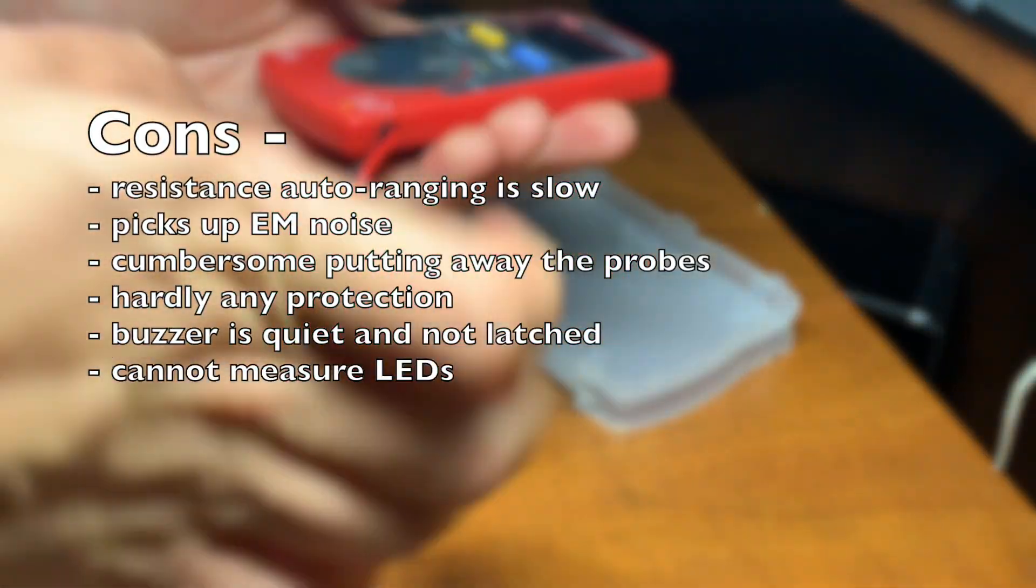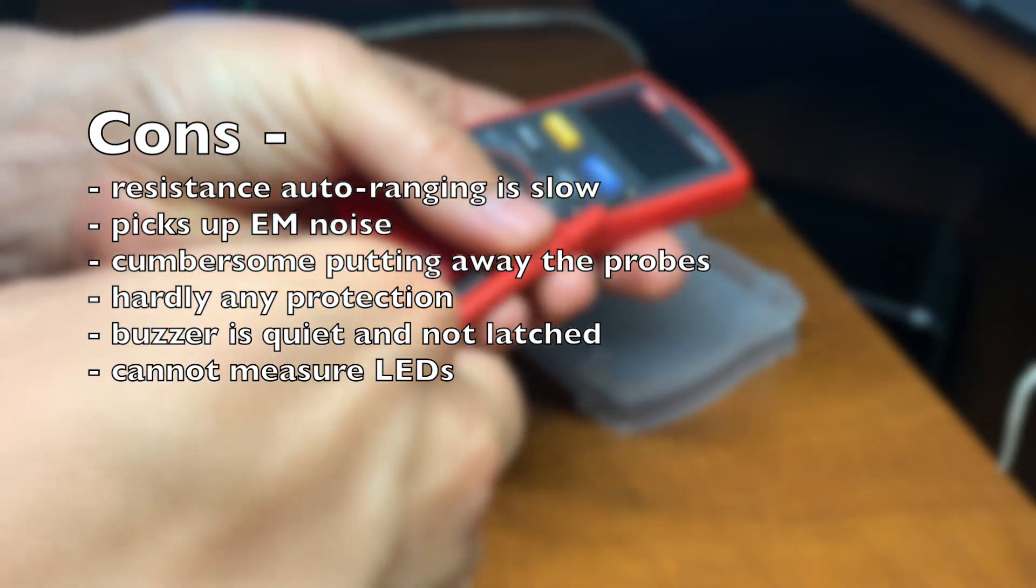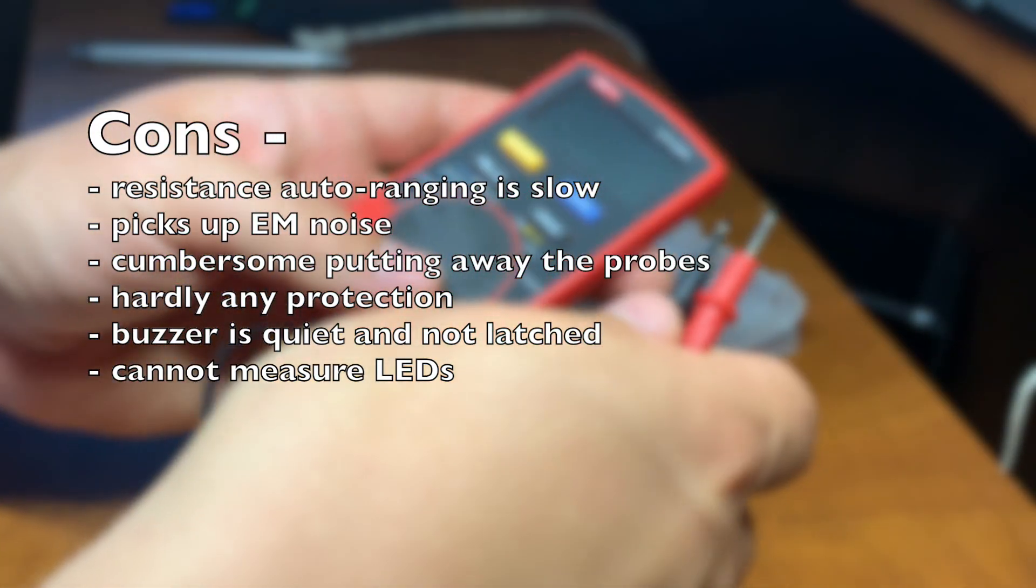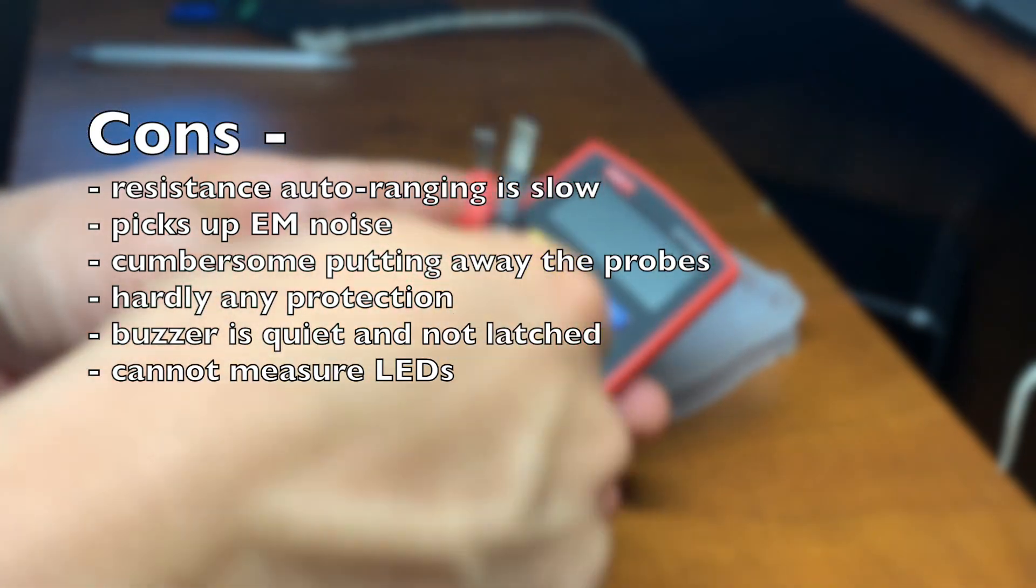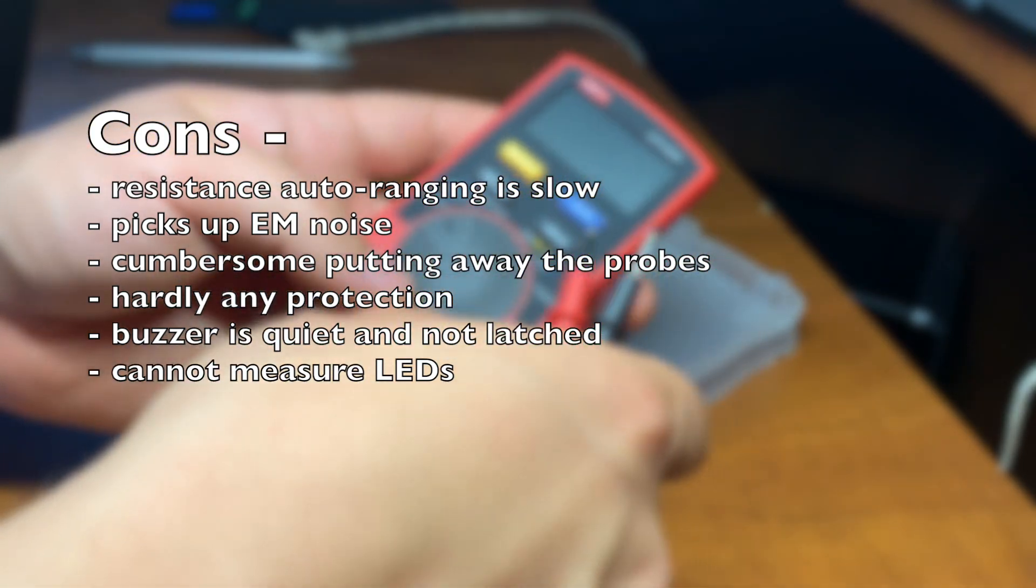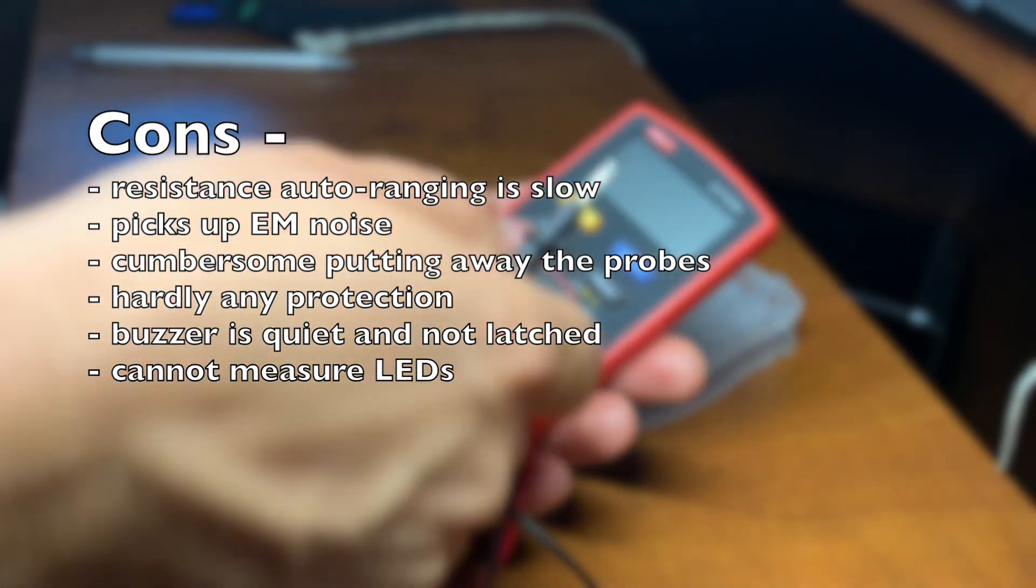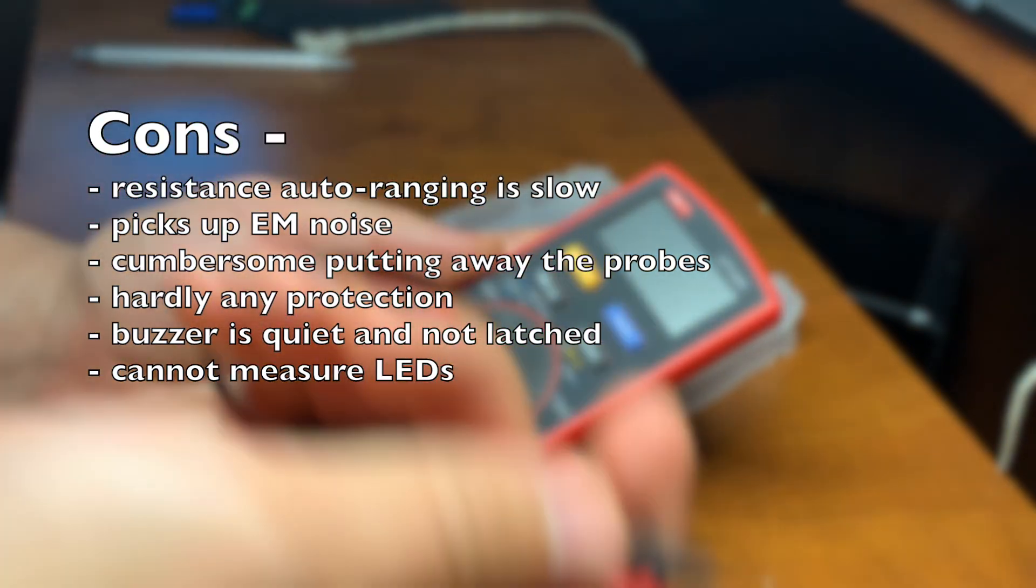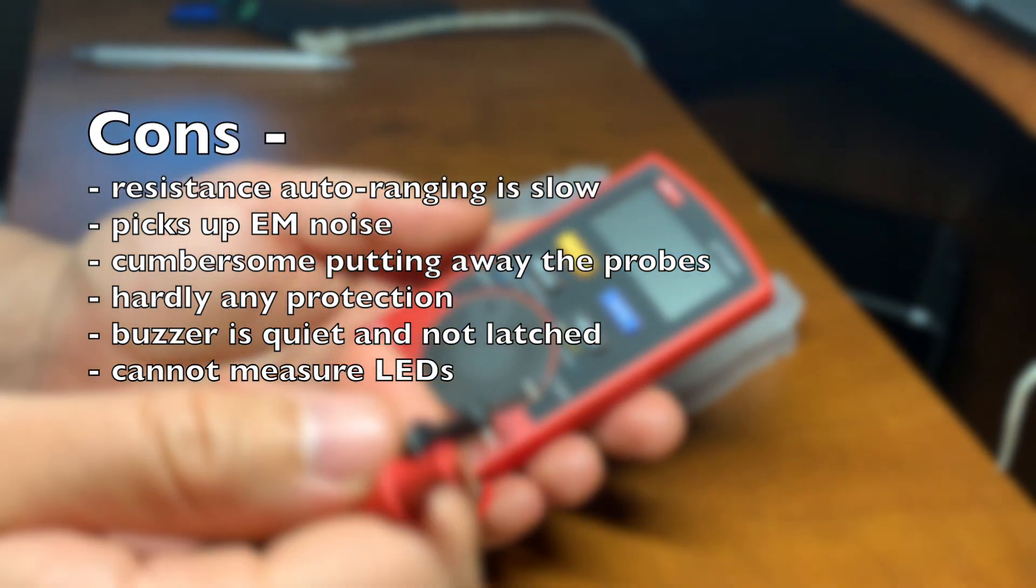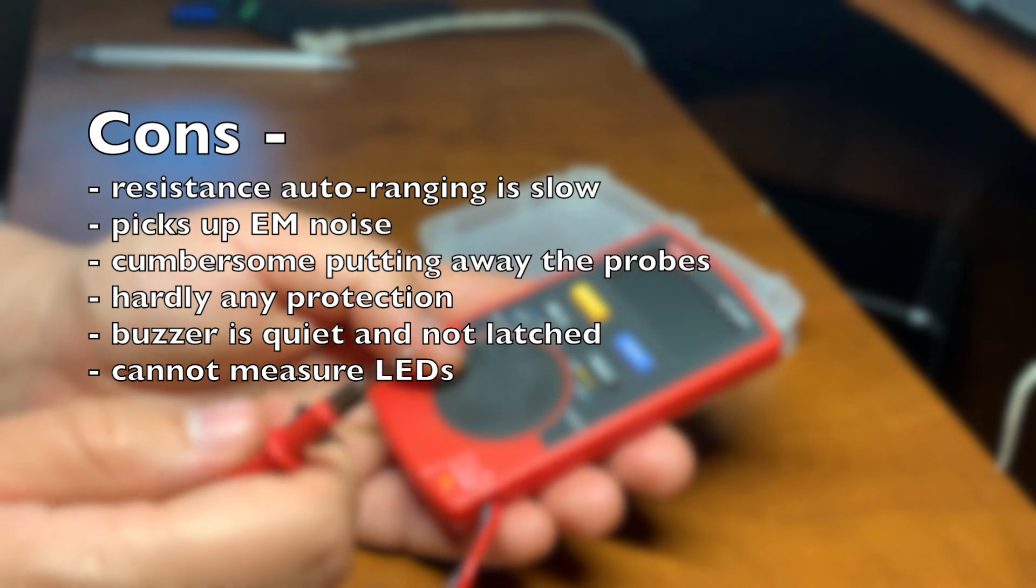Now the downsides. Resistance auto-ranging is very slow, as you saw, compared to some of the other auto-ranging multimeters. Although I have to say, if I had a manual range multimeter, that would have been slower because you have to switch to the right range if you didn't get it right the first time. It'll be much slower than even this auto-ranging.